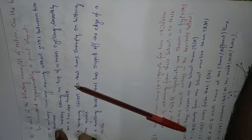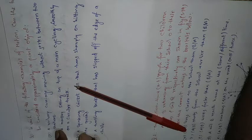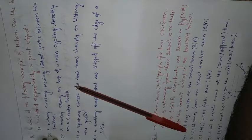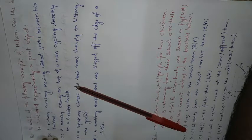Let us start. The first option is: a railway carriage moving without jerk between two stations. Will we consider it as a point object? Yes, of course. Because whatever the eligibility criteria for being a point object, it is meeting them. Our railway carriage travels a very far distance compared to its size.